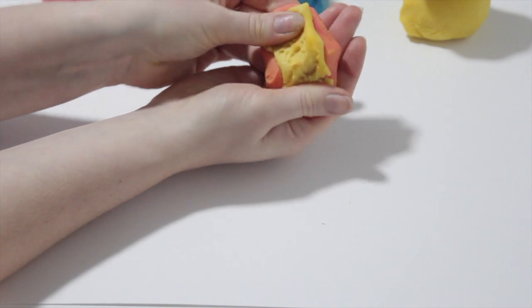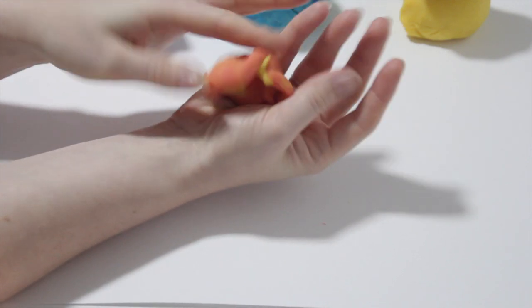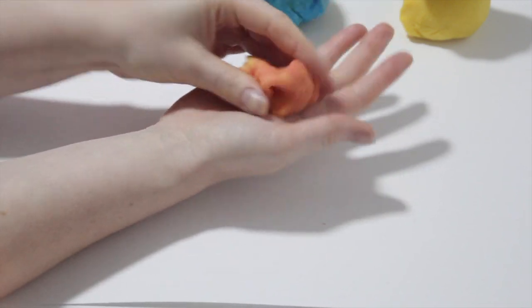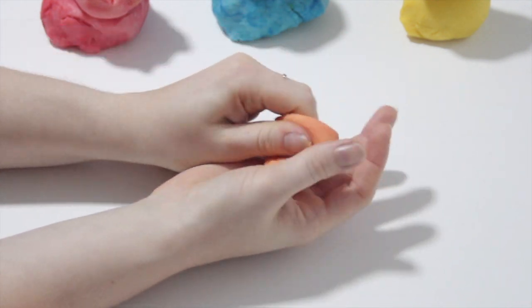If you'd like to change the color to be slightly lighter or slightly darker, you can add either yellow or red to your Play-Doh mix.